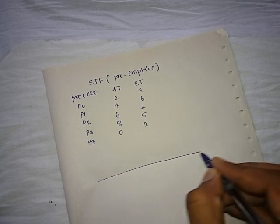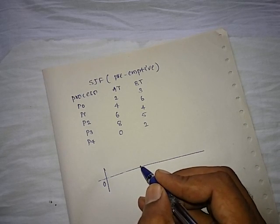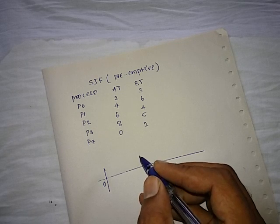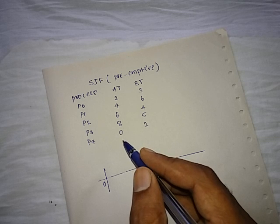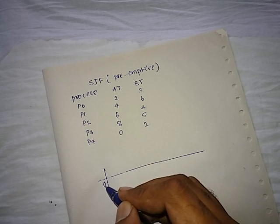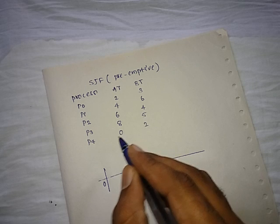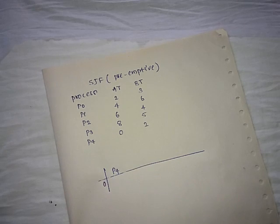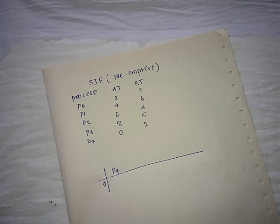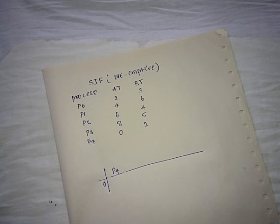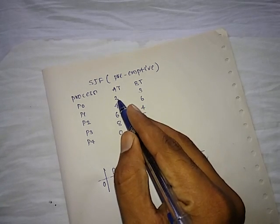The Gantt chart looks like this and starts from zero. Since arrival time is given in the question, we consider processes according to their arrival times. Starting from zero, we check: is there any process arriving at time zero? Yes, there is — that is P4. So we allocate P4 to the system. The question is: up to how much time can we execute P4? We can execute P4 until the next job comes, which arrives at time two.